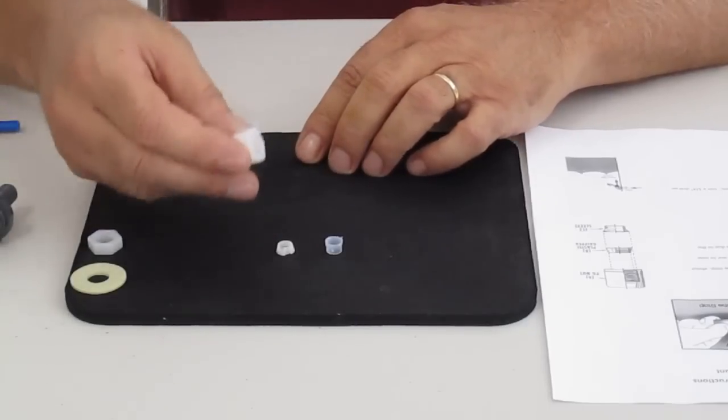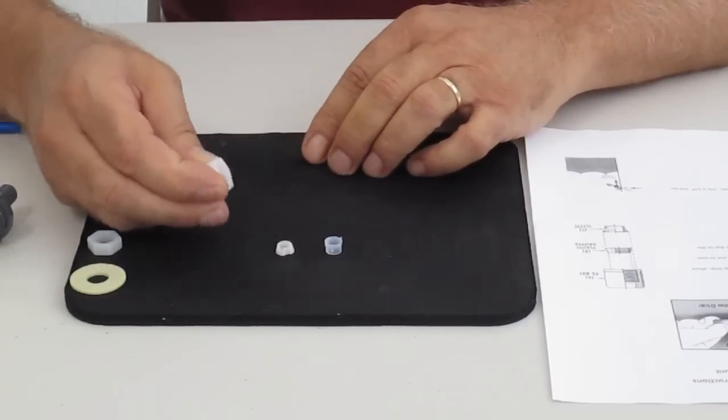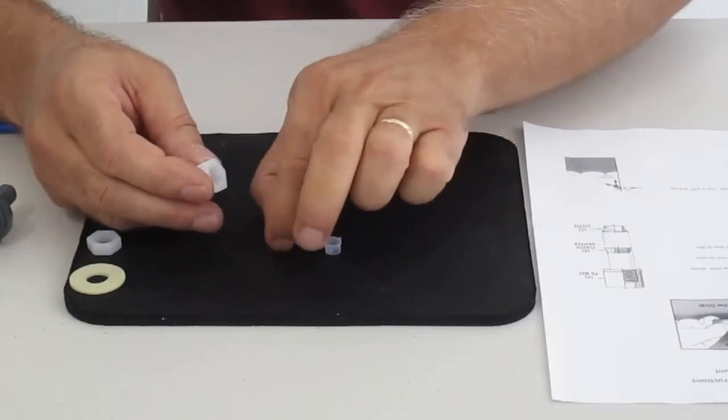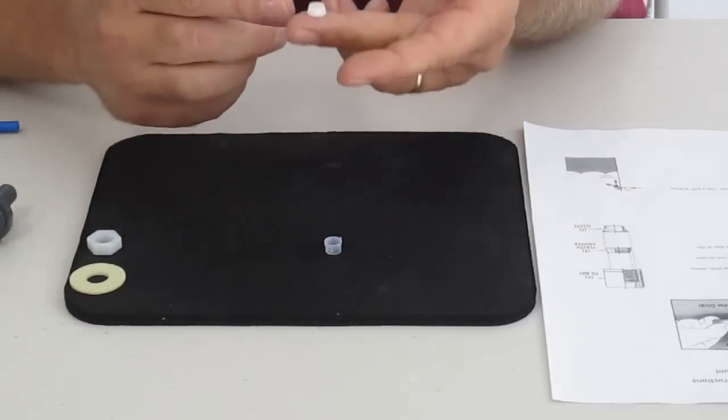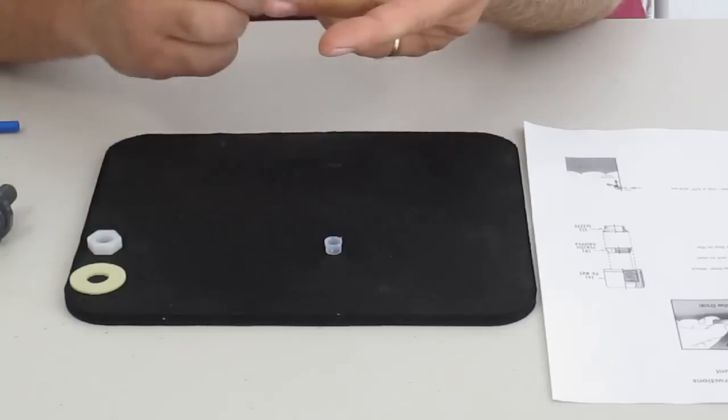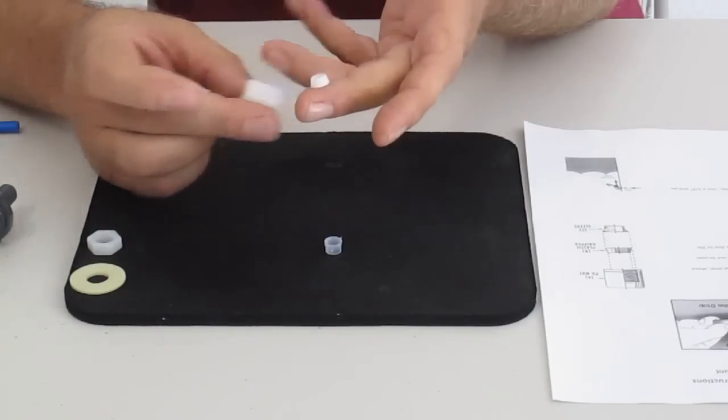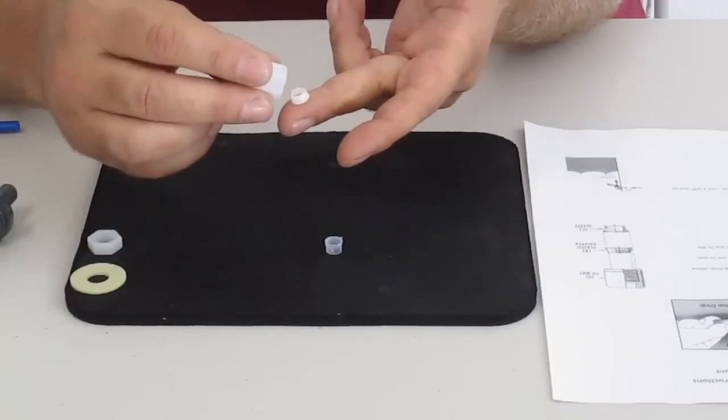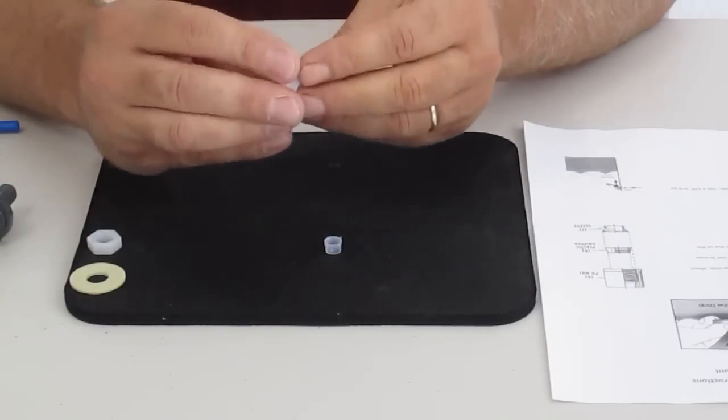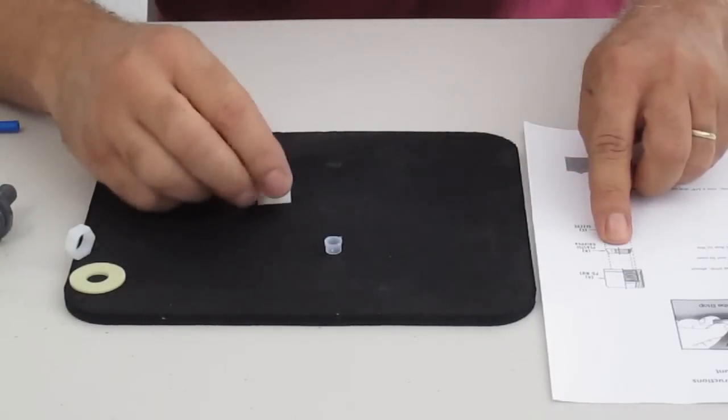You have what we call the actual nut itself. This is the bulk of the compression valve. Then you have what we call a plastic gripper. As you can see, the plastic gripper tapers inward. You want the inward side to go towards where your hose is going to plug in, so we're going to put that in first, just like that, and look at your diagram because it'll show you where it goes.